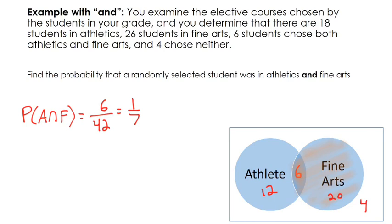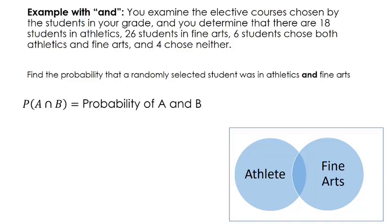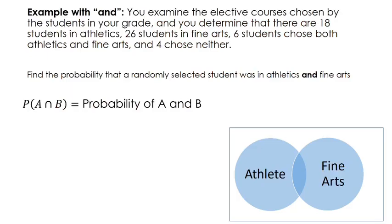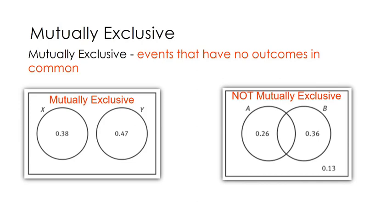That's a pretty easy example — let's kick it up a notch. Sometimes there is no overlap, no AND value. What we have are mutually exclusive events — events that have no outcomes in common. These two events would be mutually exclusive because there's no overlap. These events are not mutually exclusive because there is an overlap. In our last example, these are not mutually exclusive because some students chose both athletics and fine arts.